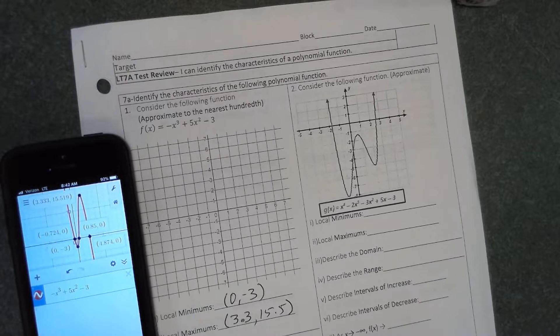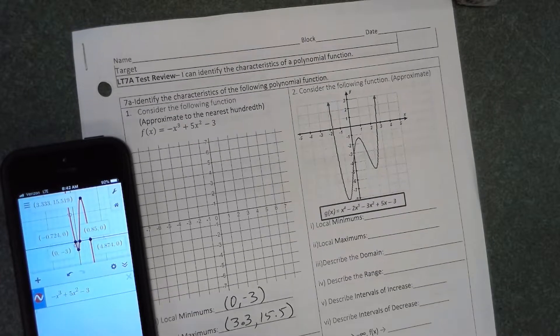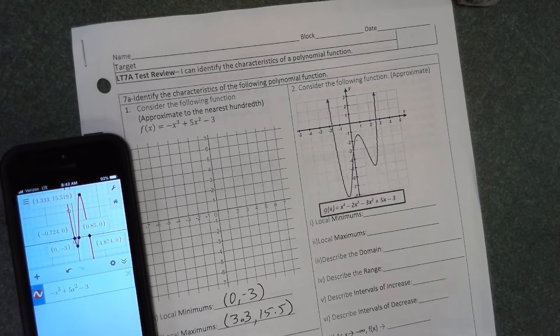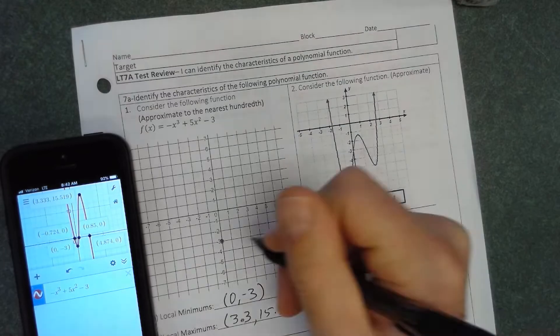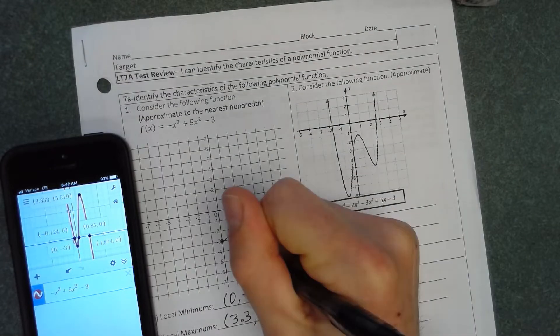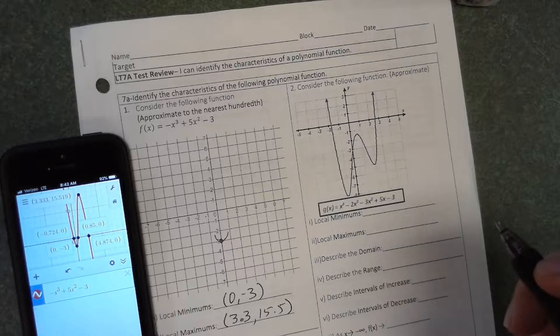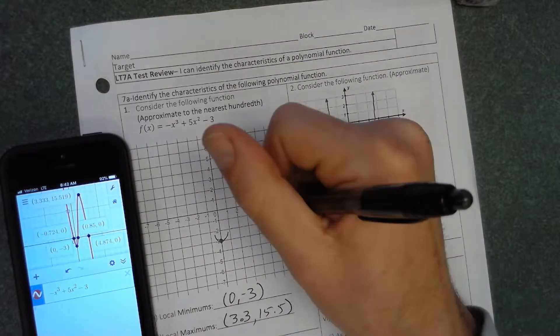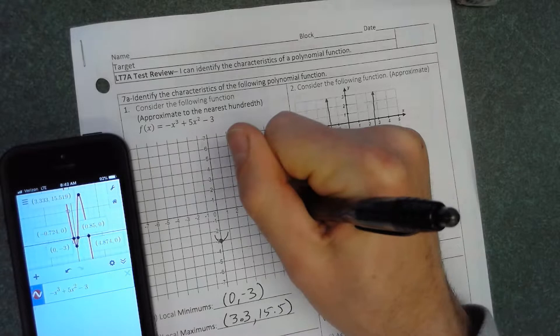When we're drawing our graph, we're going to want to pull out all these points. There's a local minimum, and a minimum point typically has a kind of quadratic shape facing up. A local maximum of 3.3, 15.5, we're going to go way up top somewhere up here.